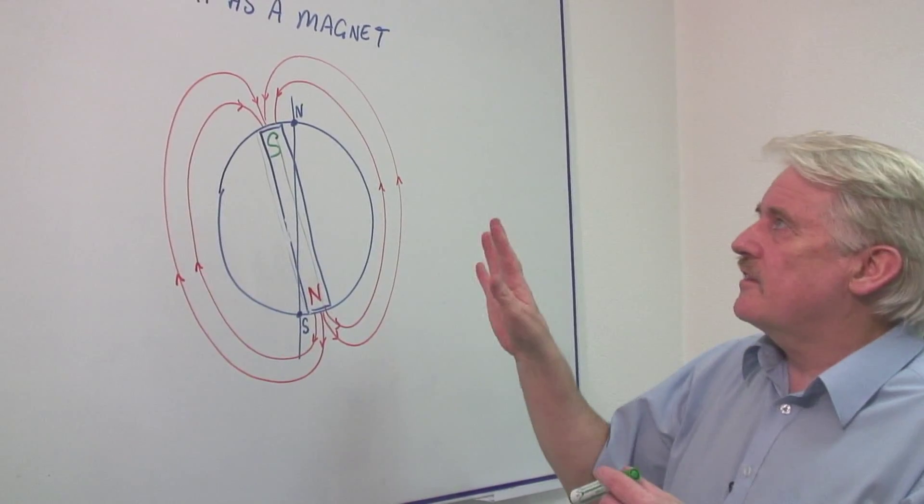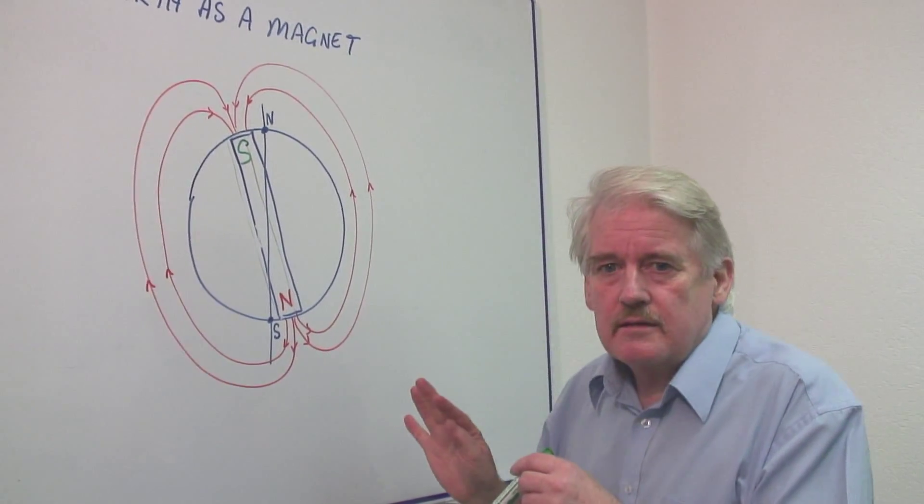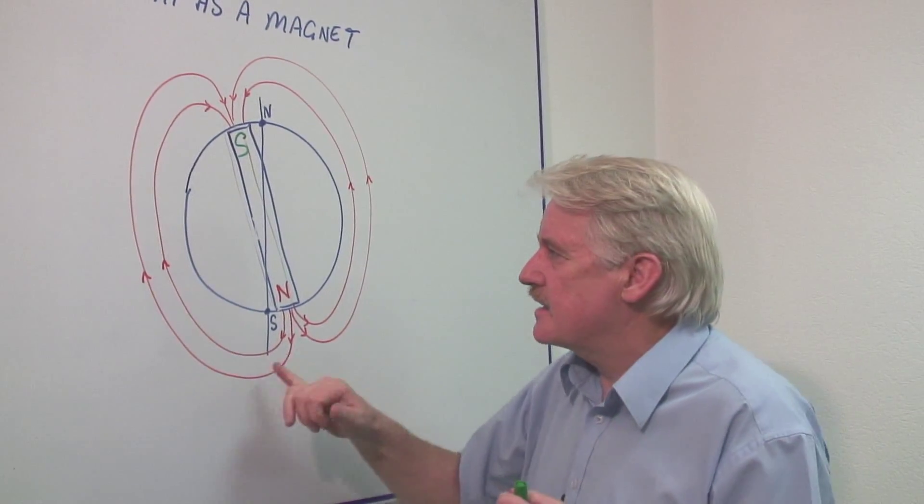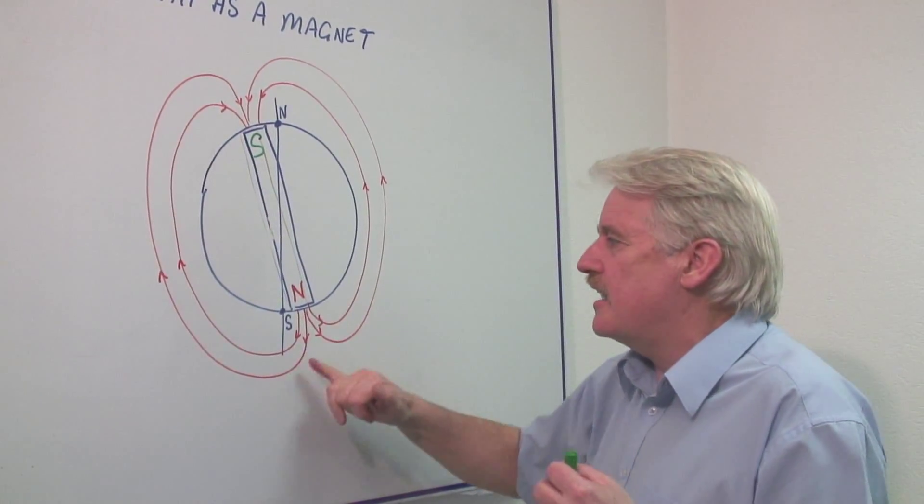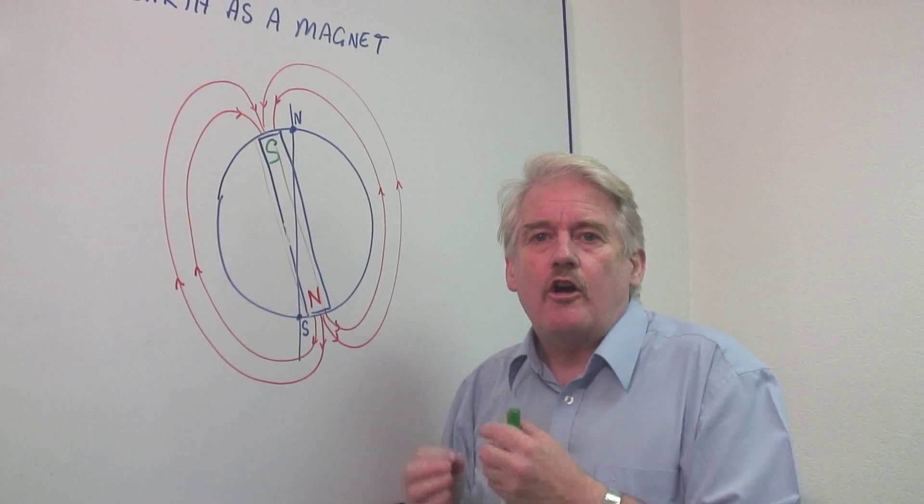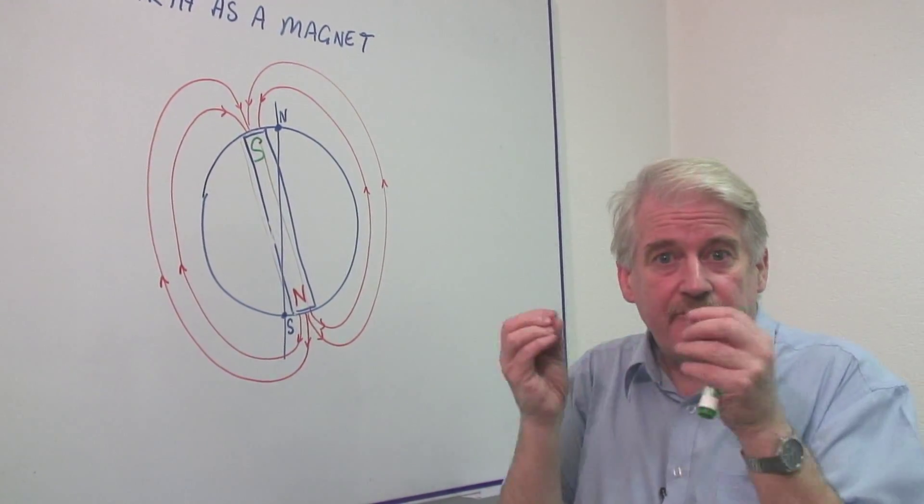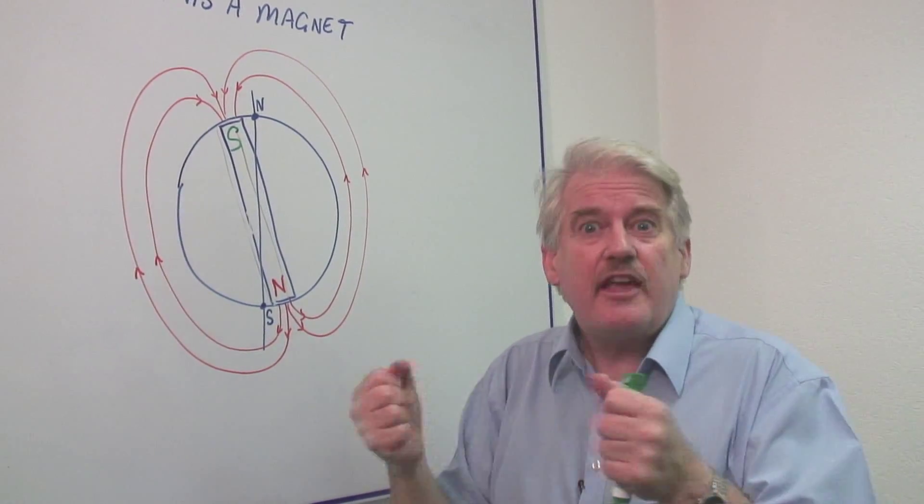This is why the earth is like a magnet because when we take anything magnetic these magnetic field lines react with the magnetic object. If you have two magnetic fields and put them together they react.